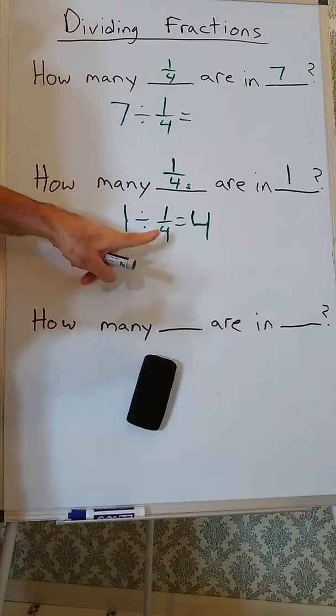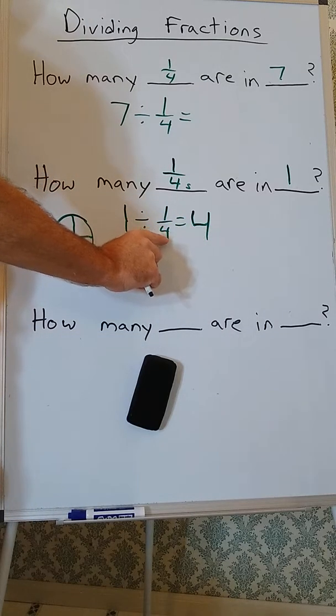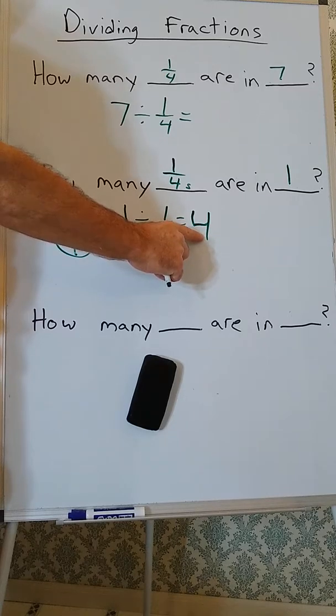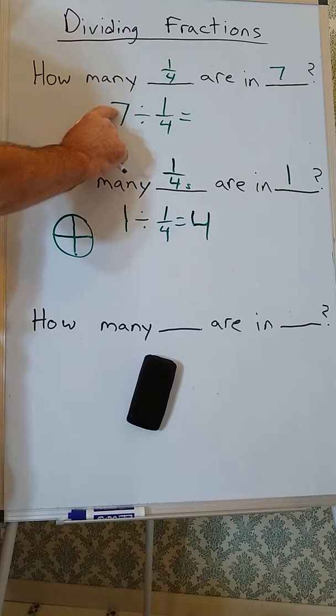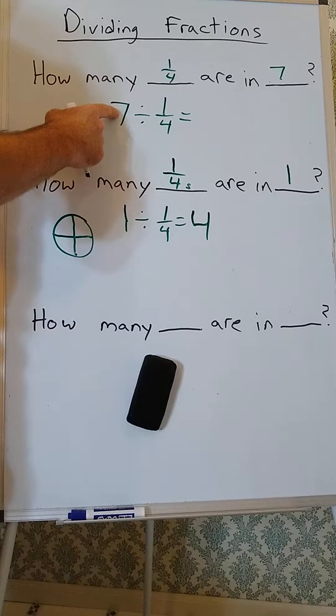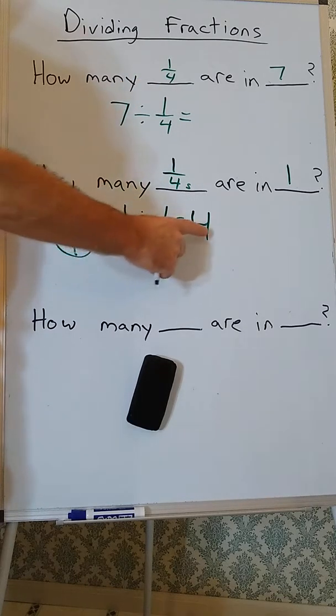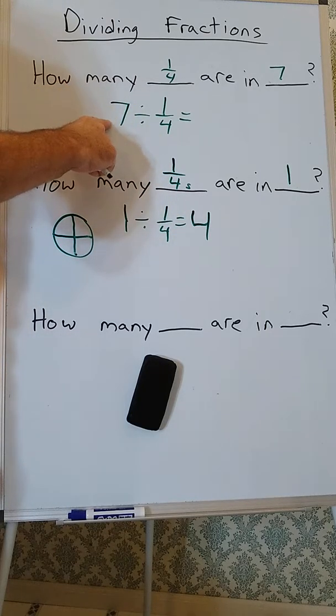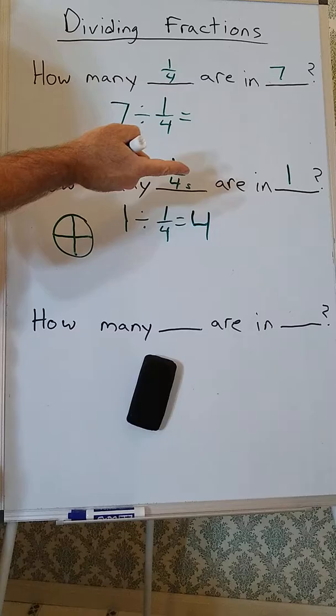Well, we see there are 4 fourths in 1. 1 divided by 1 fourth is 4. So each of these 1's, and there are 7 of them, is going to have 4 fourths. So, I divide 1 by 1 fourth, I'm going to get 4.